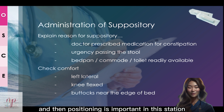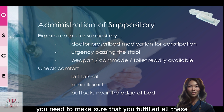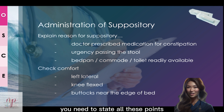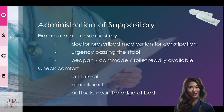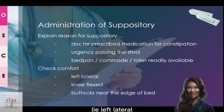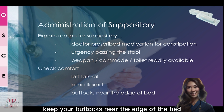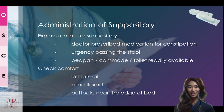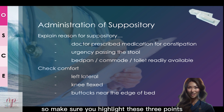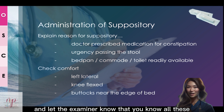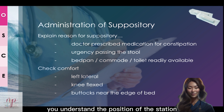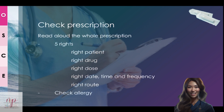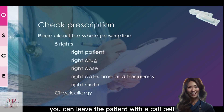Positioning is very important in this station. You need to tell the patient: 'I would like you to lie left lateral with your knees flexed. Would you mind keeping your buttocks near the edge of the bed?' Make sure you highlight these three points and let the examiner know that you understand the position for this station. After that, you can leave the patient with a call bell and then check the prescription.